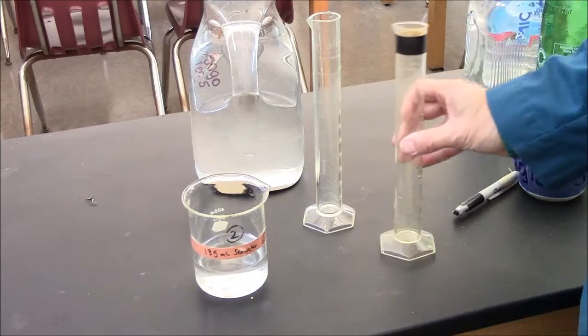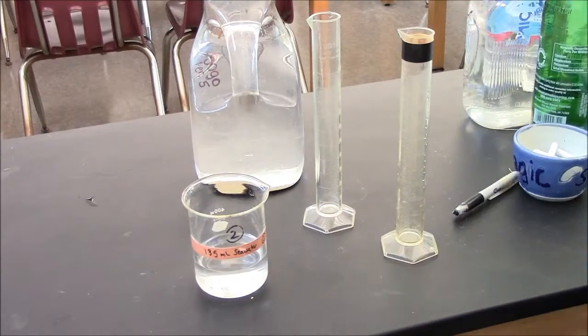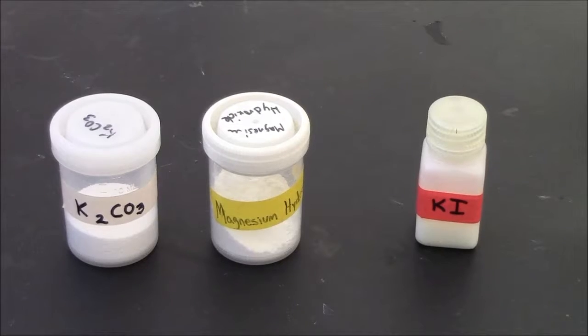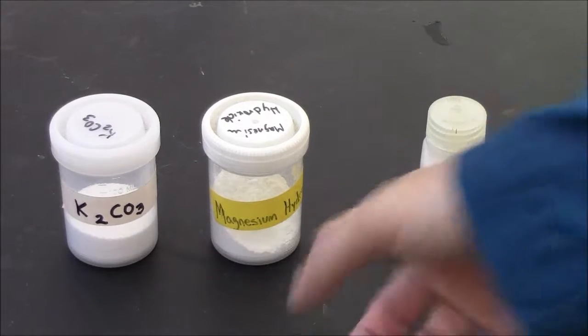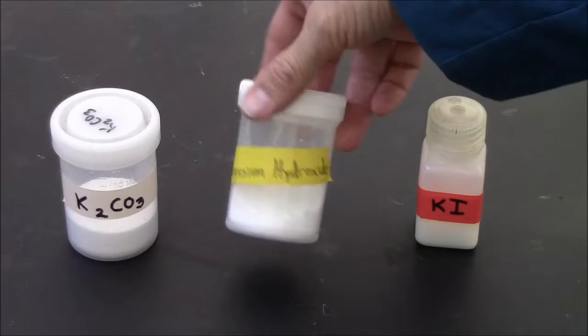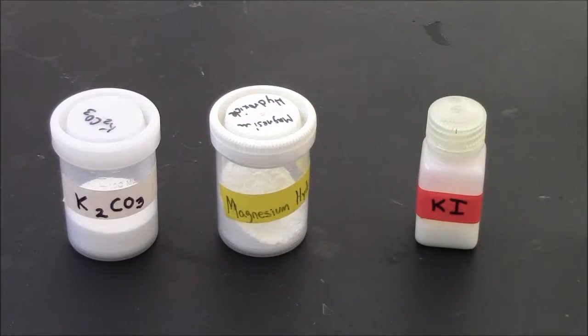Each beaker will have a different volume of seawater, so read your label. The buffet table will provide you with a variety of salts. Some may be labeled with a formula, some with a name. You should know how to translate name into formula and vice versa.